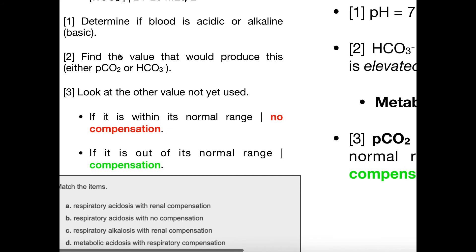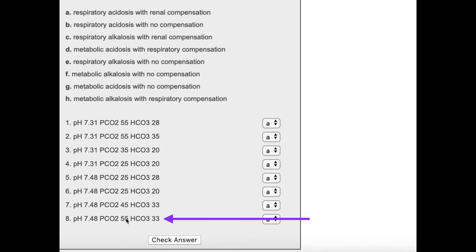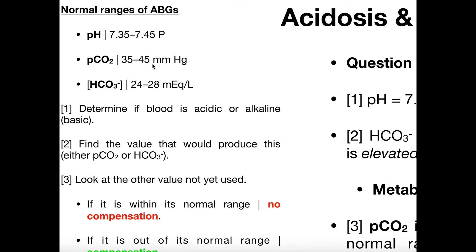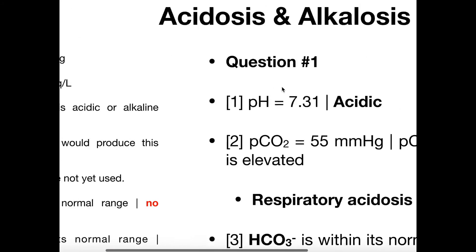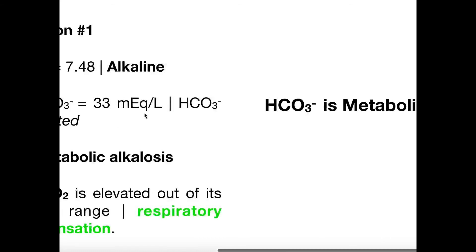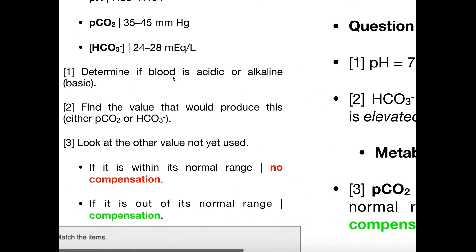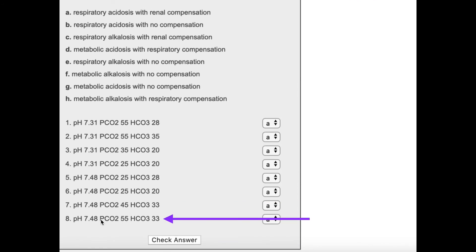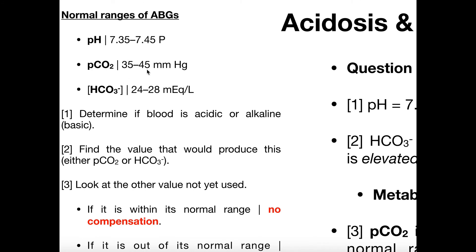For step two, we need to find the value that would produce this alkalosis: the pCO2 or the bicarbonate. The pCO2 level is 55, which is above the upper limit for pCO2. But high levels of CO2 cause a low pH — acidity — not alkalosis. So clearly the pCO2 is not causing the alkalosis. The only way pCO2 could cause alkalosis is if it were low, below 35. Here it's above 45, so pCO2 is not the cause.